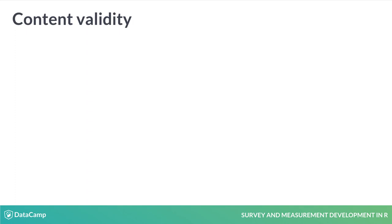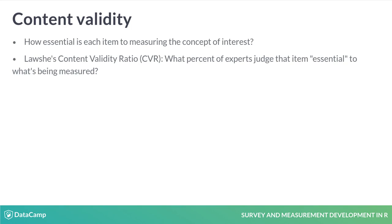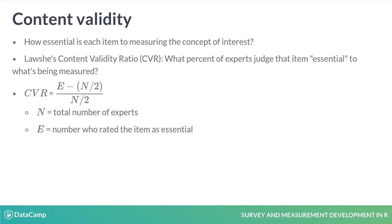A similar but distinct measure for item generation is content validity. This refers to the extent to which an individual item represents the concept of interest. The content validity ratio, CVR, is a ratio scaled from minus one to one indicating the content validity of each item. Experts rate items on a scale ranging from not necessary to essential. The CVR is derived by the total number of experts and the number of those experts who rate the item as essential to the survey.